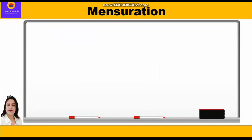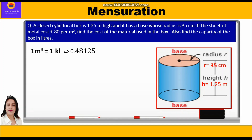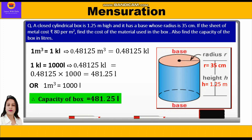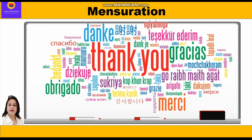This capacity is in meter cube, which we need to convert into liters. We know that 1 meter cube equals 1 kiloliter, so 0.48125 meter cube equals 0.48125 kiloliter. Since 1 kiloliter equals 1000 liters, we multiply by 1000 to get 481.25 liters. Alternatively, since 1 meter cube equals 1000 liters directly, we multiply 0.48125 by 1000 to get 481.25 liters. Hope you have understood this question, thank you everyone.